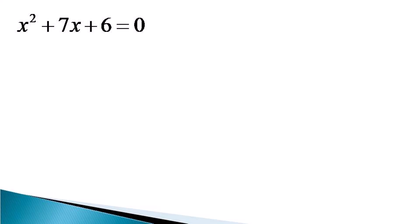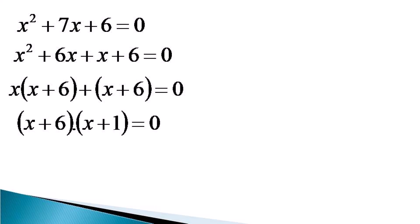So to solve this equation, we start factorizing and we write it as x square plus 6x plus x plus 6 is equal to 0. We take x common from the first two terms to get x into x plus 6 and we leave the other two terms as x plus 6 which becomes equal to 0. Now we take x plus 6 common to get x plus 6 into x plus 1 is equal to 0.